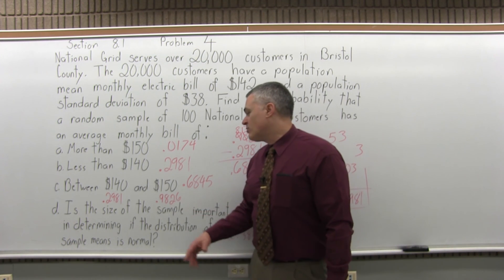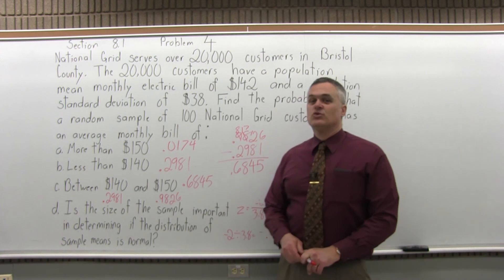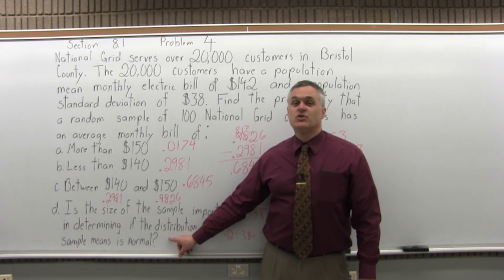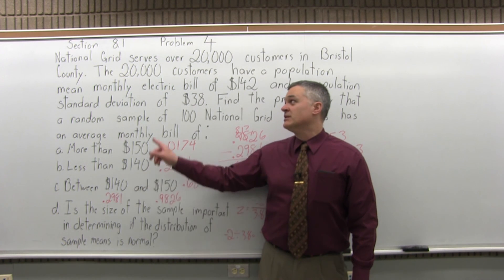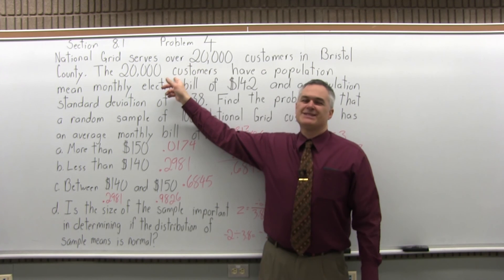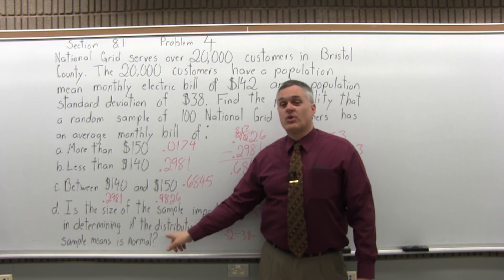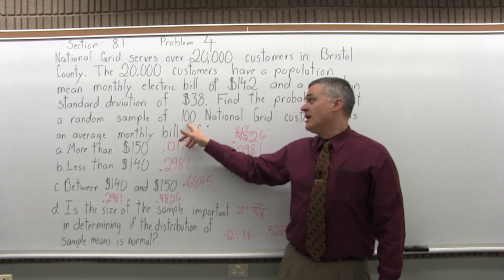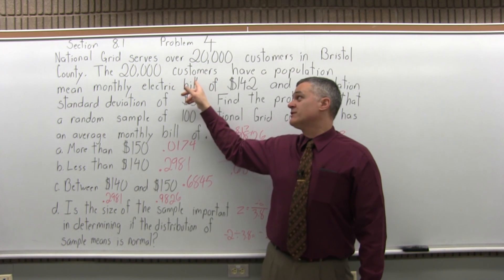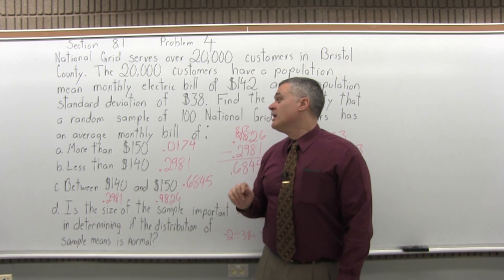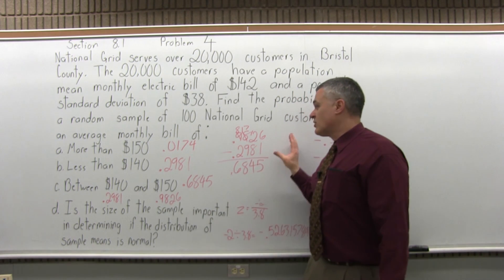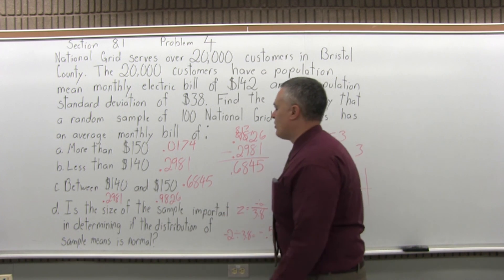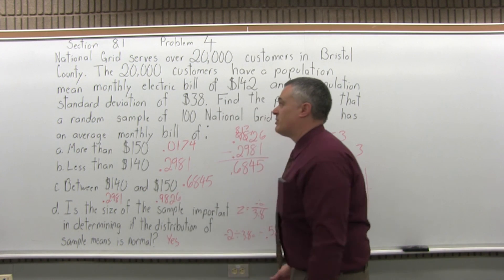Part D: is the size of the sample important in determining if the distribution of sample means is normal? You must ask whether we know the original population is normally distributed. For National Grid customers' electric bills, we can't be sure, so the sample size is important — it must be at least 30, and our sample of 100 satisfies that. If the population were known to be normal, smaller samples would work fine, but since we don't know, we need 30 or more.